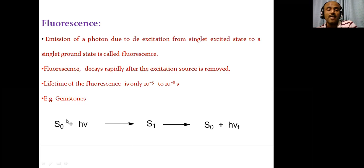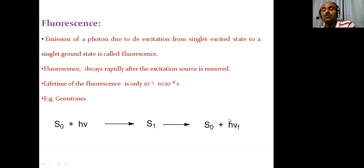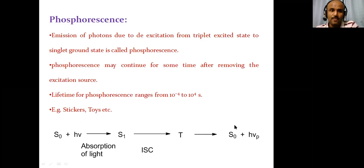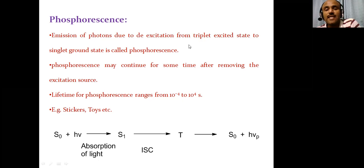The fluorescence process is shown with the help of this reaction: S0, the ground state, absorbs radiation hν and gets converted into S1, the singlet excited state. From the singlet excited state it comes back to ground state S0 by emission of a photon denoted by hν_f. This emission of radiation is called fluorescence. Next, phosphorescence: emission of photons due to de-excitation from the triplet excited state to the singlet ground state is called phosphorescence.